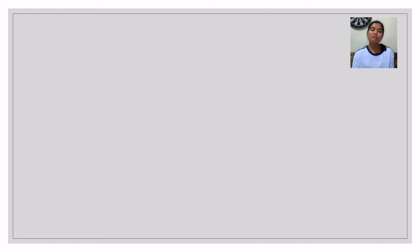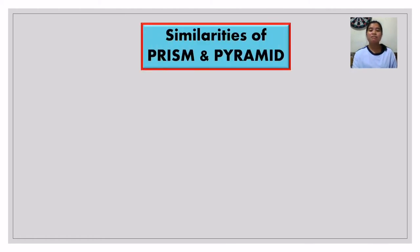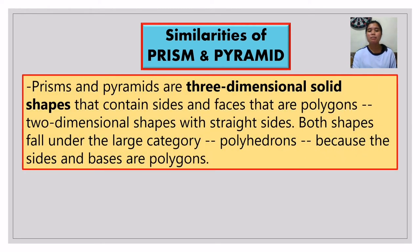Let's begin with the similarities of prisms and pyramids. What are their similarities? Prisms and pyramids are three-dimensional solid shapes that contain sides and faces that are polygons. When we say polygons, their sides are straight — straight lines or straight sides. So if the faces or sides are curved or circular in shape, it is not considered a prism or pyramid.